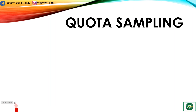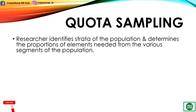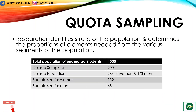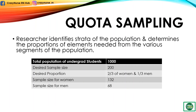The second one is quota sampling. This is one in which the researcher identifies strata of the population and determines the proportions of elements needed from the various segments of the population. For example, in a study on attitudes of nursing students working with infectious patients, the accessible population has an undergraduate enrollment of 1,000 students, two-thirds of which are women and one-third are men. If the researcher desires to get the opinion of sophomores, juniors, and seniors, then the percentage of each level in the total enrollment should be determined.